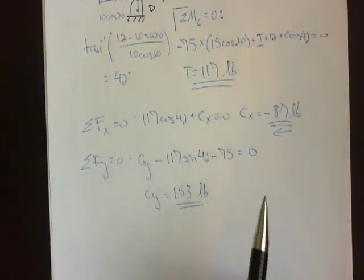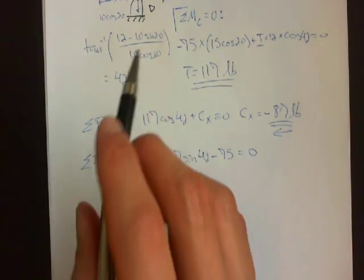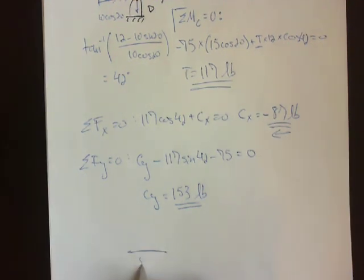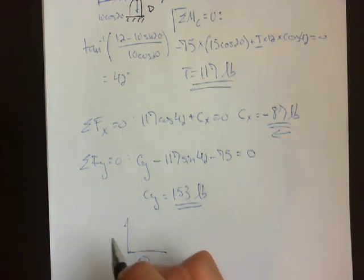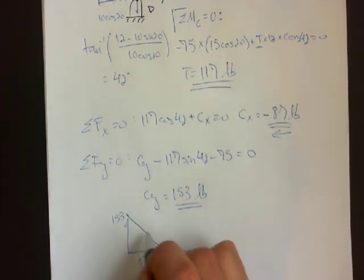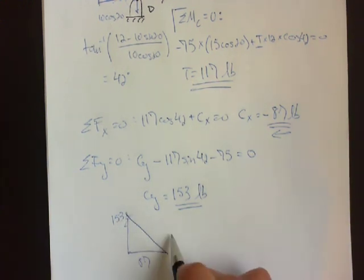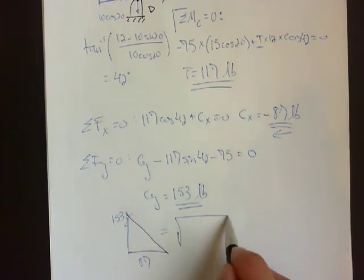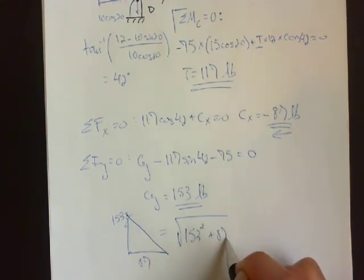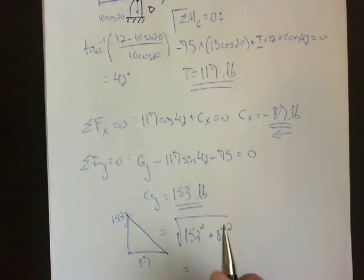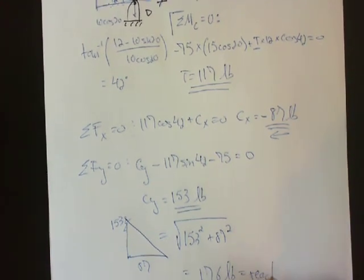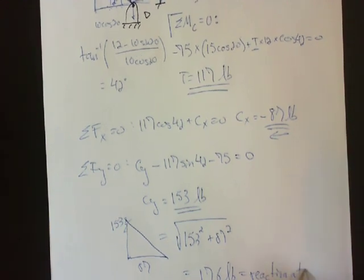So this tells us that the horizontal component of the reaction at C goes left 87, then goes up 153. So it's like this, which is equal to the square root of 153 squared plus 87 squared, which equals 176 pounds. This is the reaction at C.